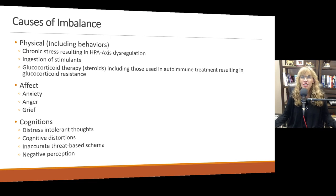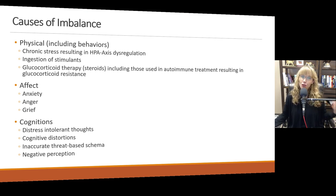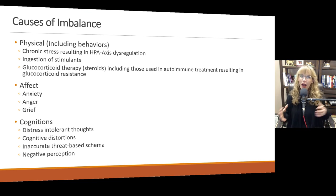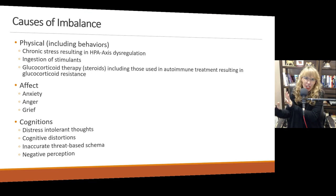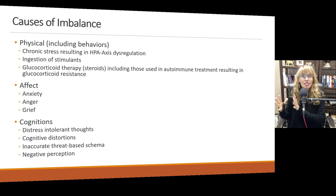So what causes adrenaline to be out of balance? A lot of things, unfortunately. Chronic stress resulting in HPA axis dysregulation — when we're under chronic stress and the tissues are regularly exposed to cortisol, glutamate, and adrenaline, eventually the tissues say that's too much, I can't run that hot all the time. And they become insensitive or resistant to those hormones.